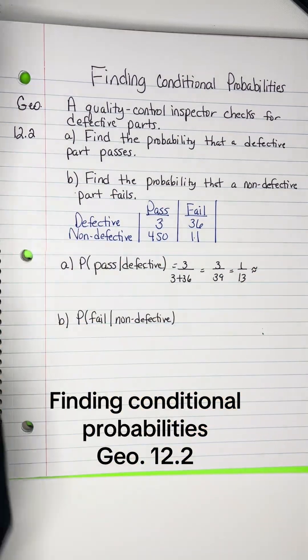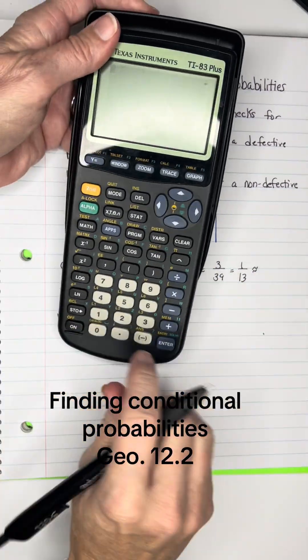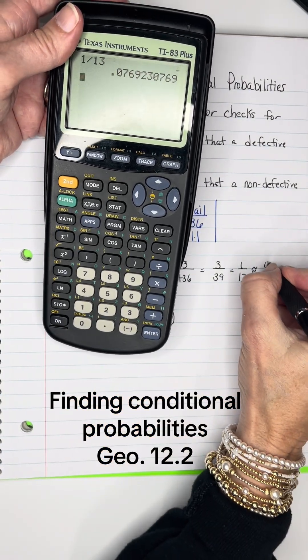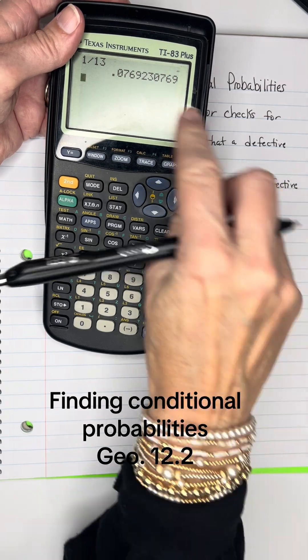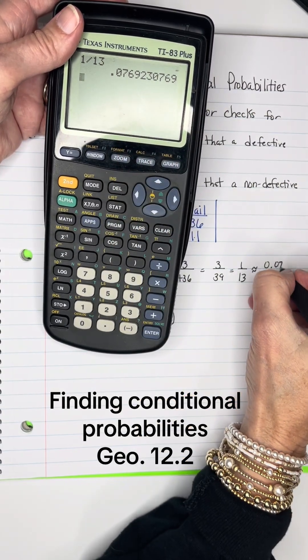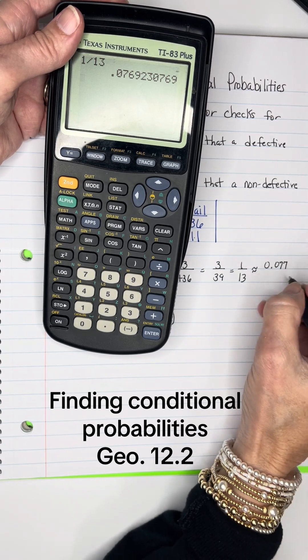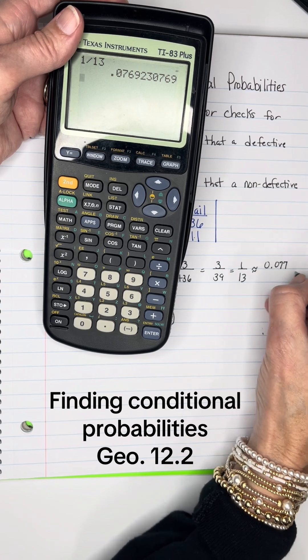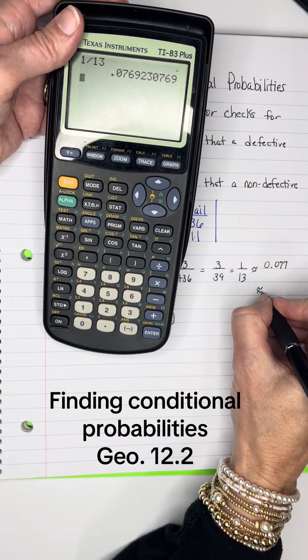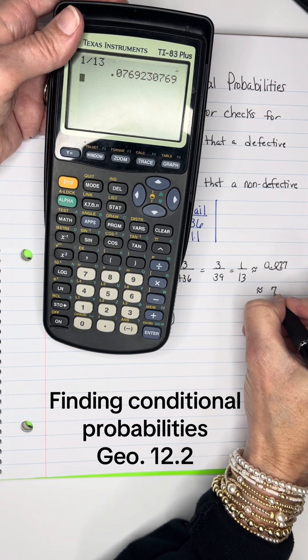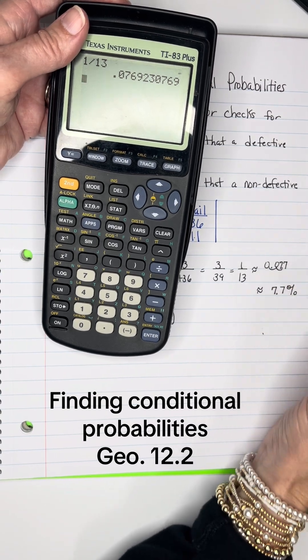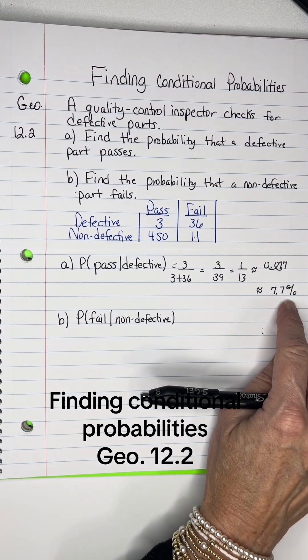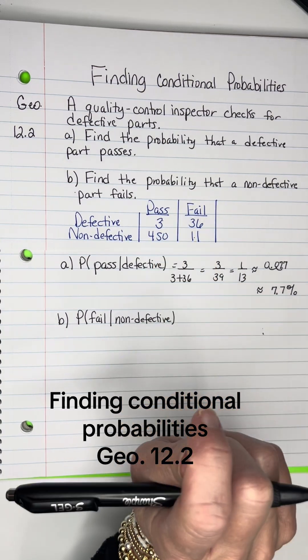If I round that off, 1 divided by 13 is about 0.077. We're going to make that approximately - move that decimal over twice - 7.7%. So 7.7% passed but were defective.